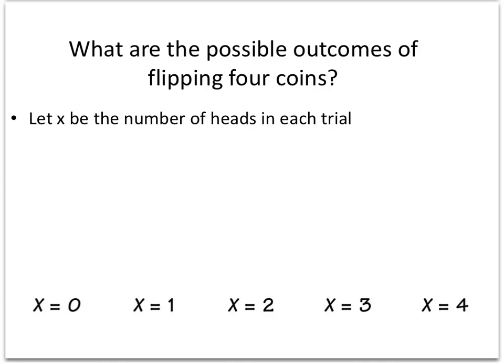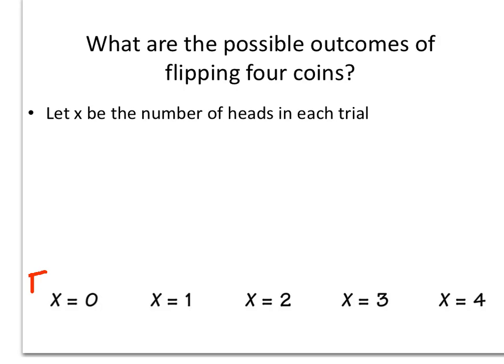Let's go back to the discrete random variable. What are the possible outcomes for flipping four coins? Let X be the number of heads in each trial. I'm going to flip four coins and I get X equals zero, meaning there's no heads. The only way I can do that is to have four tails.